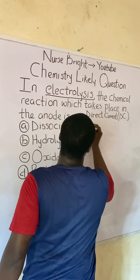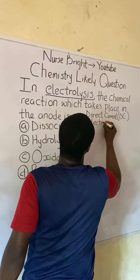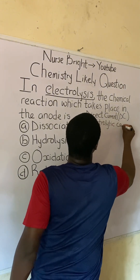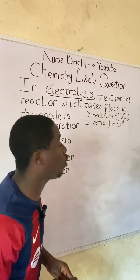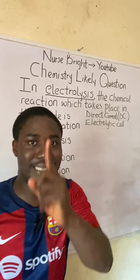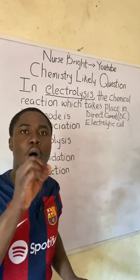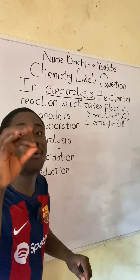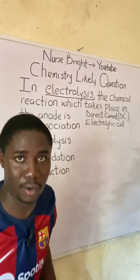Electrolysis occurs in a special vessel called the electrolytic cell — not the electrochemical cell, which is different from an electrolytic cell. Moving further, before we can answer this question we have to understand the concept of an electrolytic cell.